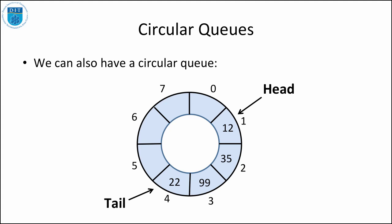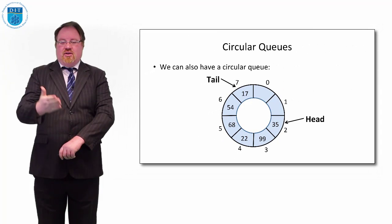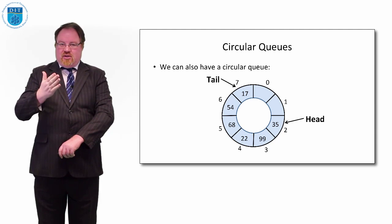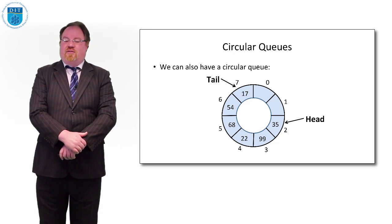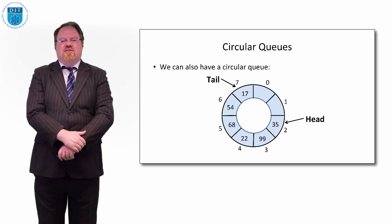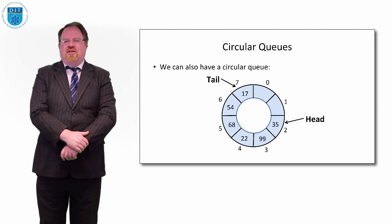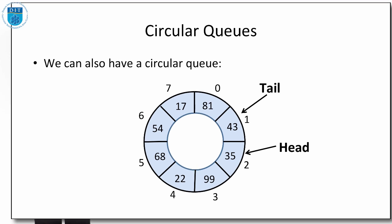Let's look at that in action. I can take an element away from the head, then add one to the tail, then add another one to the tail. I can take another one away from the head, then add one to the tail. Now in a normal queue, the queue would be full when we get to that point — once you get to the back of the queue, the eighth element in this case, the queue is full — but we can see there are a couple of empty slots at the start of the array: zero and one.